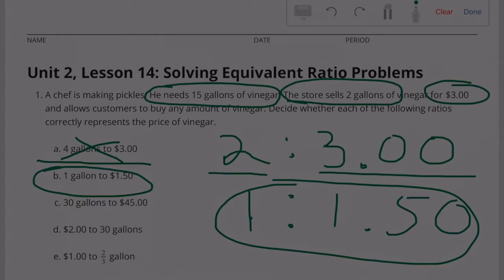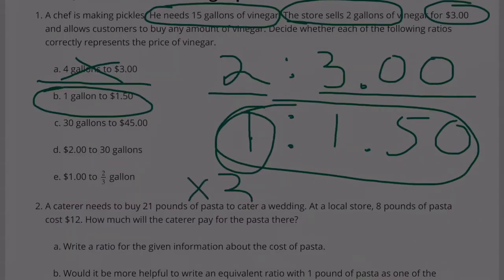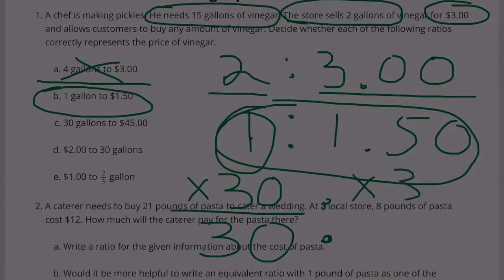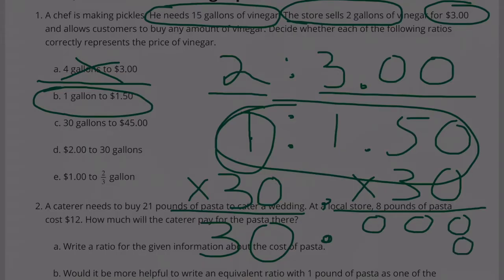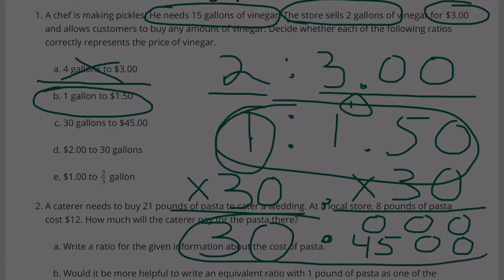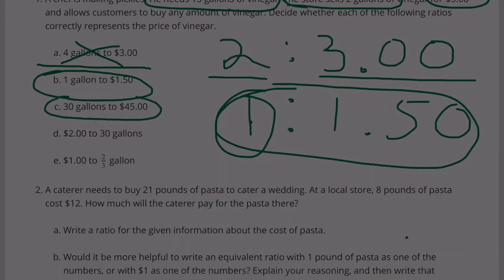Option C: 30 gallons to $45. Let's multiply 1 times 30 to make 30 gallons, and then multiply $1.50 times 30 to see if it gives us 45. 1 times 3 plus 1 is 4, so 30 to 45. We know that's true.